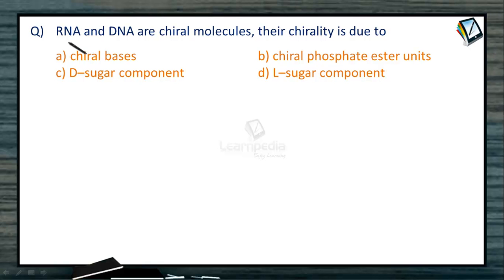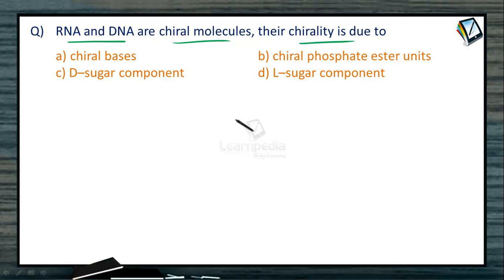RNA and DNA are both chiral molecules, and we need to find out the reason for their chirality. Is it due to the chiral bases, the chiral phosphate ester units, the chiral D-sugar component, or the L-sugar component?